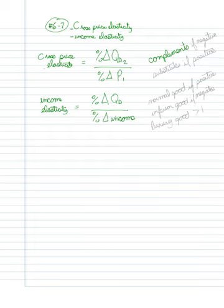What we'll see here is that the two products are complementary goods if this is a negative number, and that they are substitute goods if this number is positive.